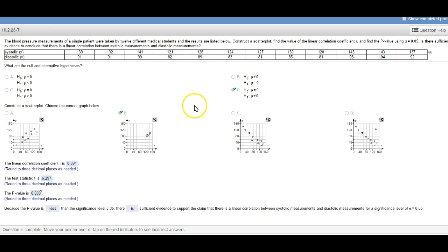I want to walk you through how to do one of these with this question. So the very first question says there's 12 different medical students measuring one person's blood pressure and we're trying to find if there is a linear correlation between these two at alpha equals 0.05.